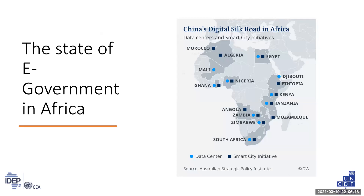Smart cities use emerging technologies to improve local government. UN DESA defines smart cities as local governments that harness and leverage cutting-edge technologies to accelerate sustainable development. In some African countries, governments are creating entirely new smart cities, whereas in other countries, municipalities are making existing cities smarter. Smart cities remain the exception rather than the rule, largely due to a lack of awareness among national and local governments of the potential advantages from using emerging technologies.